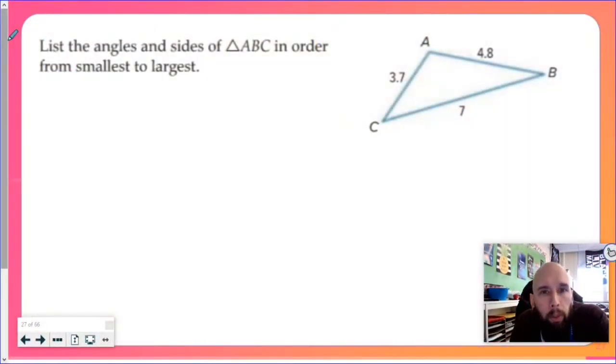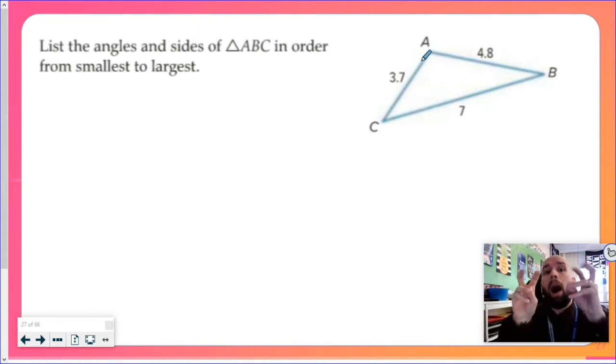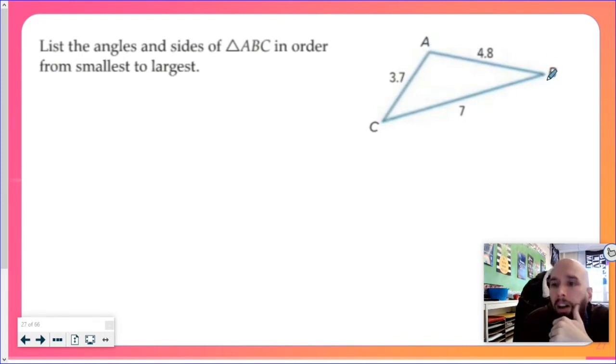All right, let's talk about the relationships between triangles and their sides and angles and how they're related to each other. By sides, simply put, if I have a side like 3.7, the angle opposite of that side is the angle not touching that side. Similarly, if I have an angle like B, the side opposite of that angle is going to be the side that doesn't touch this angle.